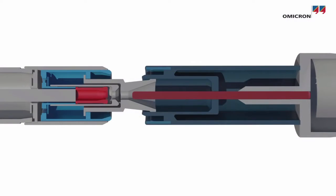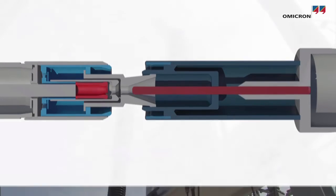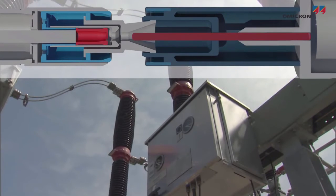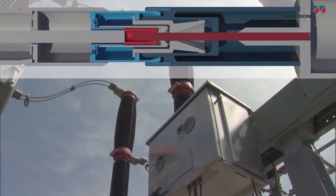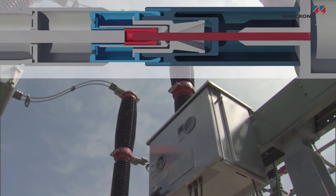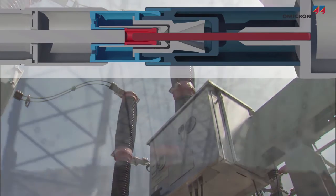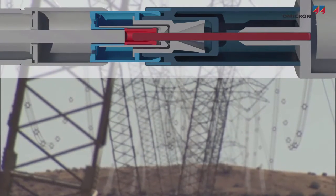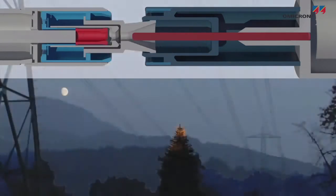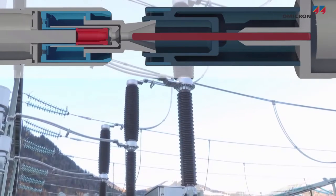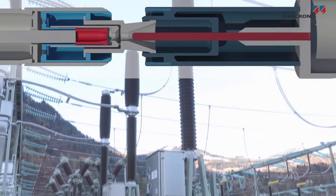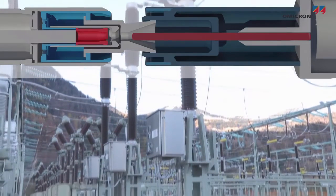In the open position, they have to ensure isolation across the switching distance between phases and to ground. In the closed position, they have to allow the energy to flow with minimum losses. They need to be able to reliably interrupt short circuit currents without damaging themselves or adjacent equipment, even after long idling times.